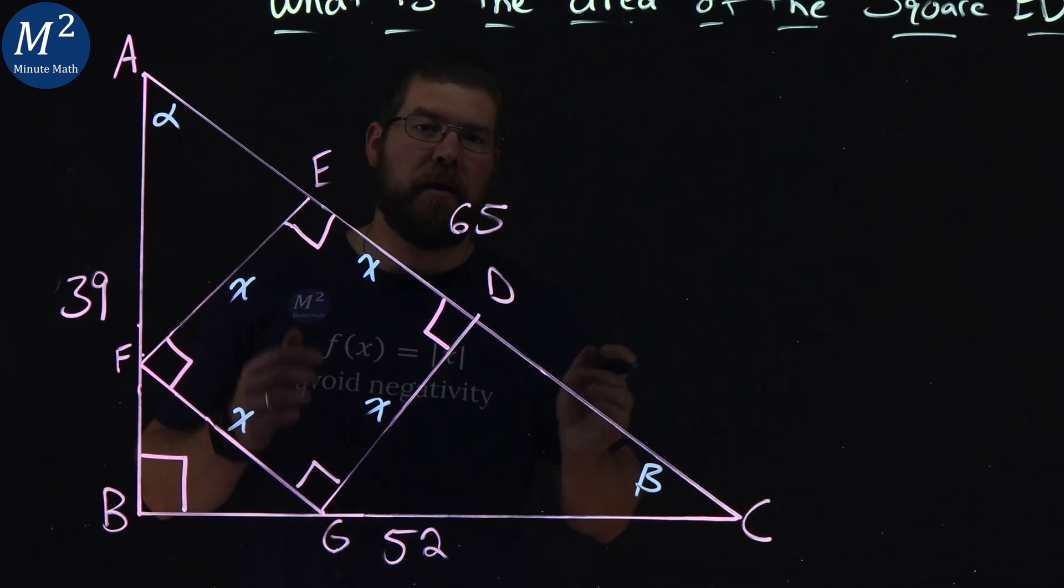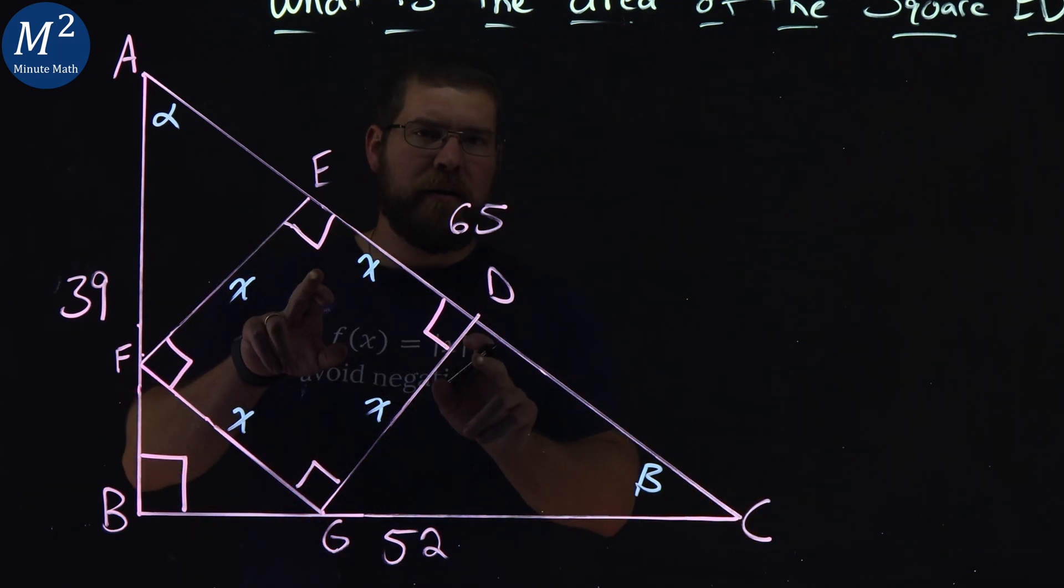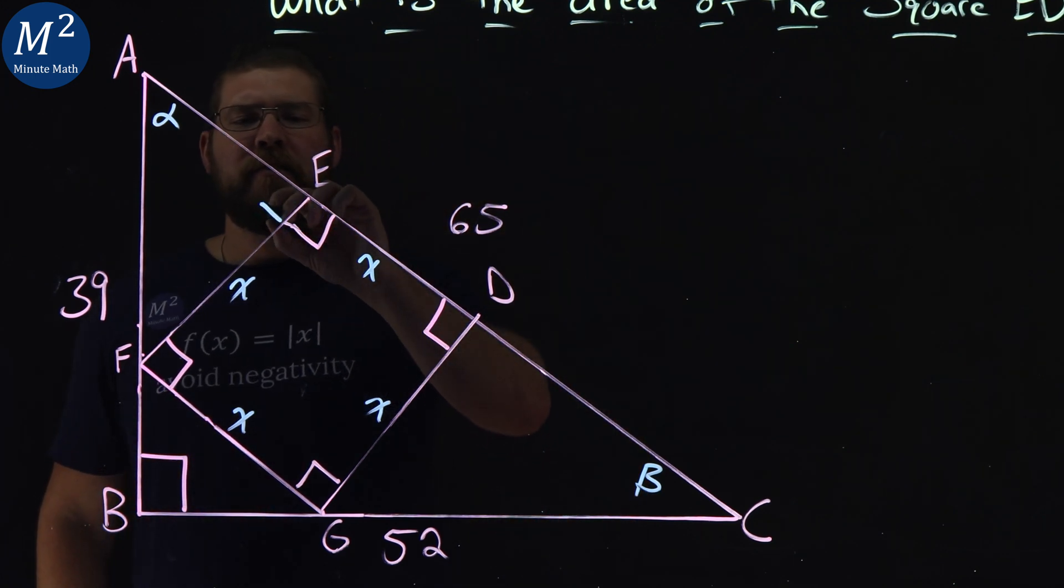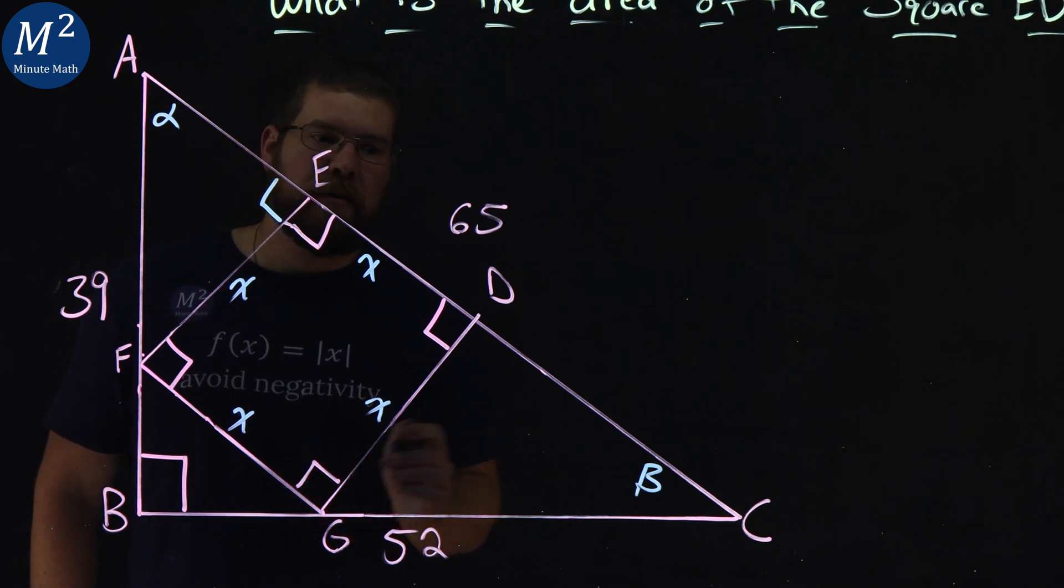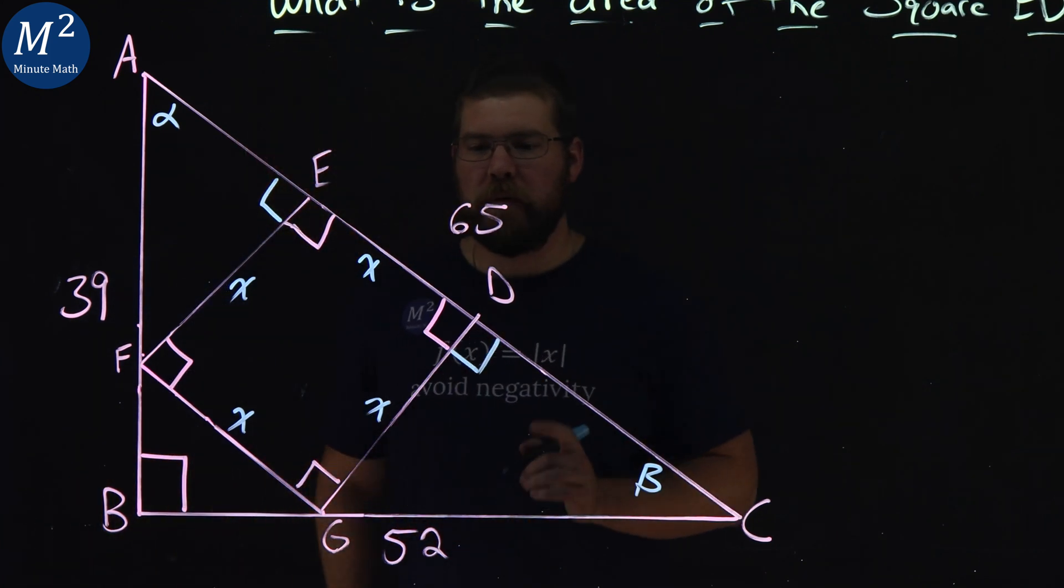All right, we have alpha and we have beta. Now, what do we know about our square here? Well, we have a right angle right there, not drawn to scale. That means this is also a right angle right here. Same thing here, we got a right angle on this side.